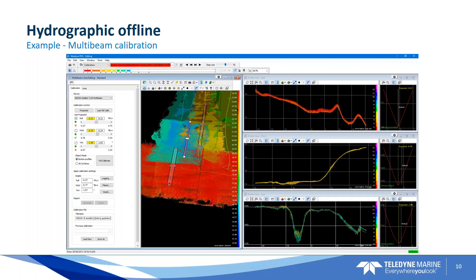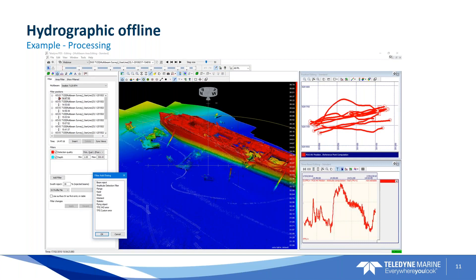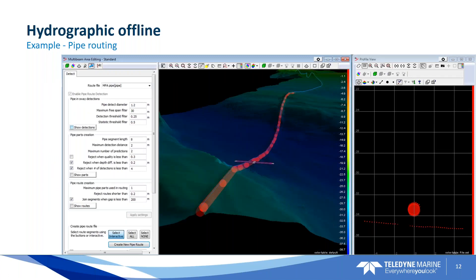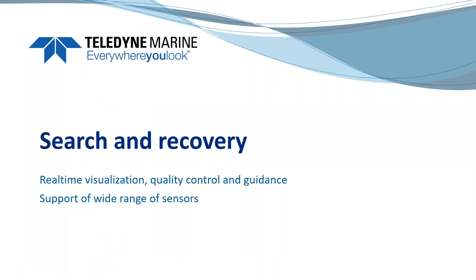We also have a processing module to clean up multi-beam and single-beam data, with different views you can apply for screening and analyzing your data. It can also be more sophisticated — for example, if you need to detect pipes, you can work with pipe detection. All kinds of features are available in the same software package.